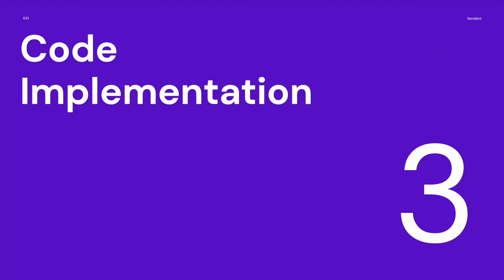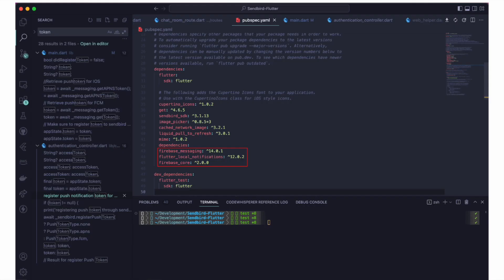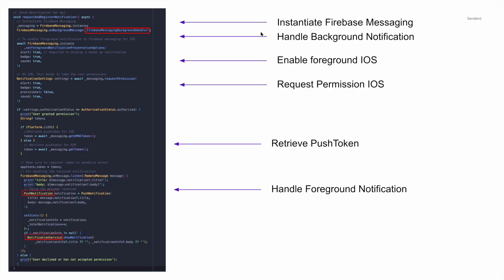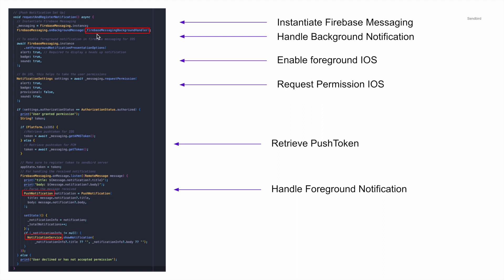Now let's jump into how we can implement this in code. First, let's download the packages: Firebase Messaging, Flutter Local Notifications, and Firebase Core. We're going to first initialize Firebase in the main app so that it is always initialized and running. Next, we're going to create a method where we can both request and register notifications. Inside this method, we first instantiate Firebase Messaging. In the second line, there's Firebase Messaging's on-background-message handler, where we handle background messages — the Firebase Messaging background handler is a method I'll go over next.